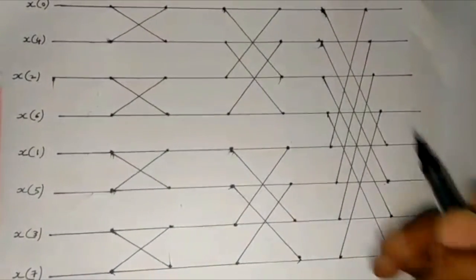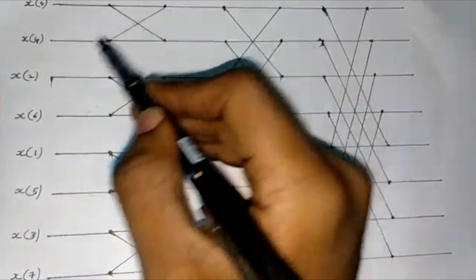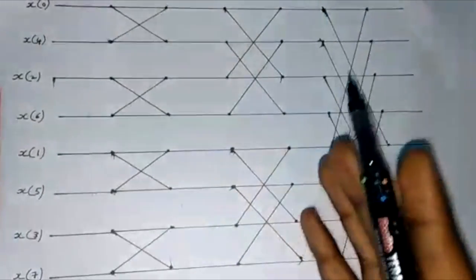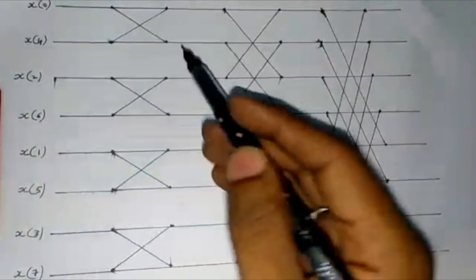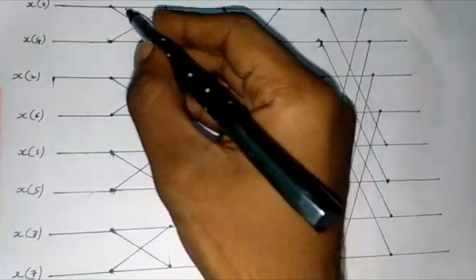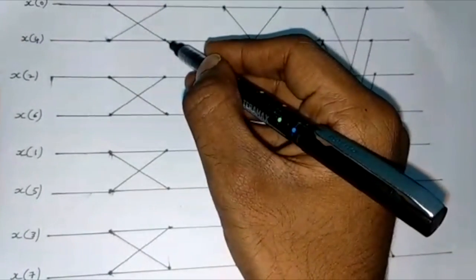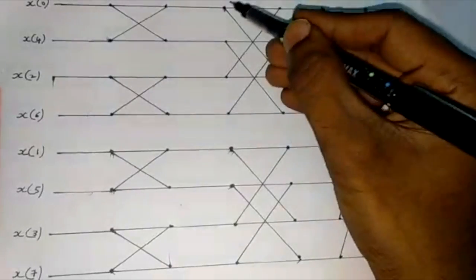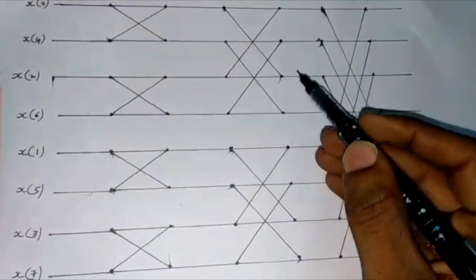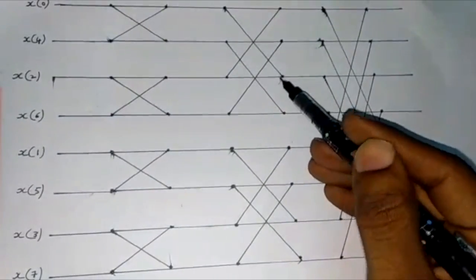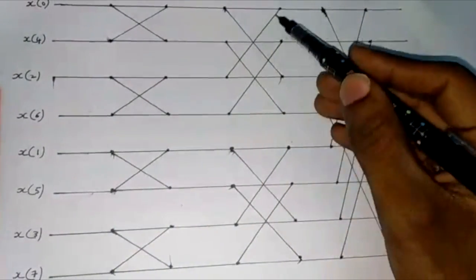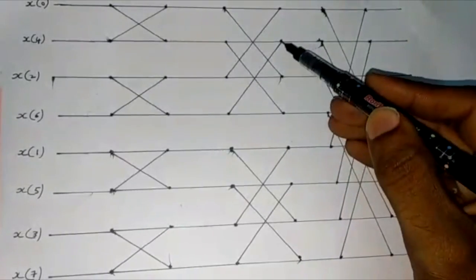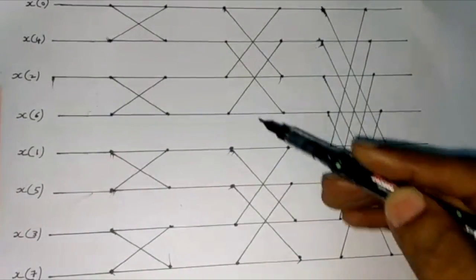Now draw 8 parallel lines with equal spacing and write the numbers in the order we obtained. Consider three columns. In the first column, connect each line to the next adjacent line. In the second column, connect each line across, leaving one line in between. The same connection pattern is applied going down.